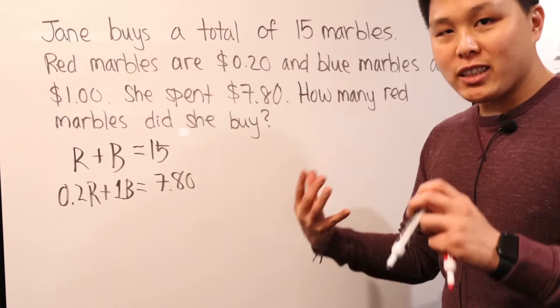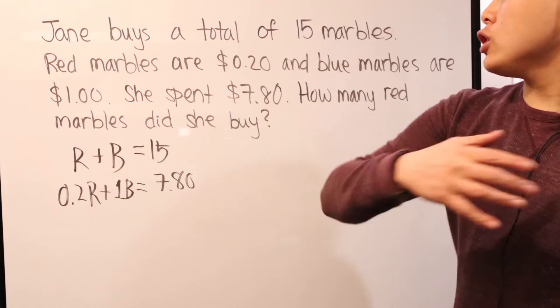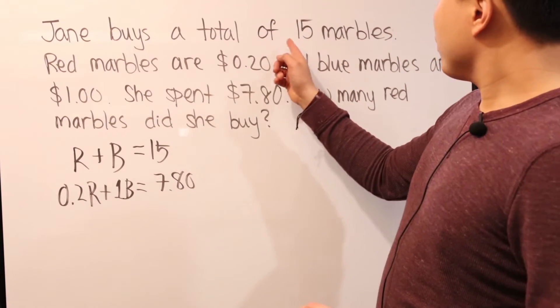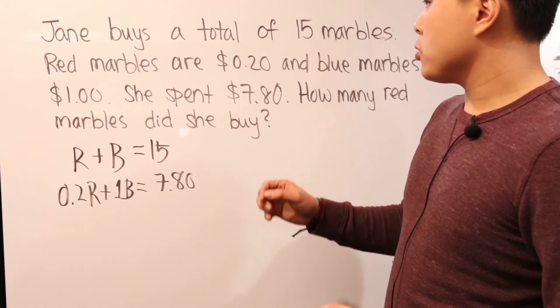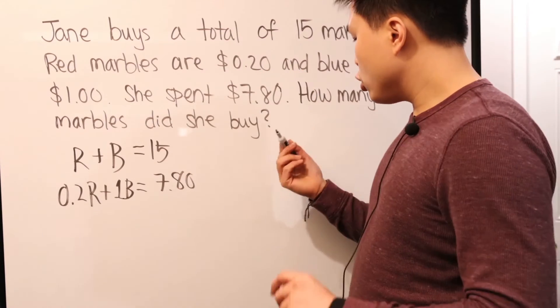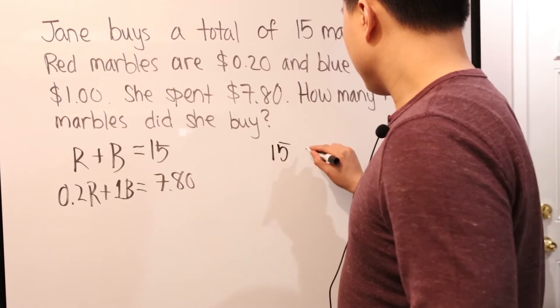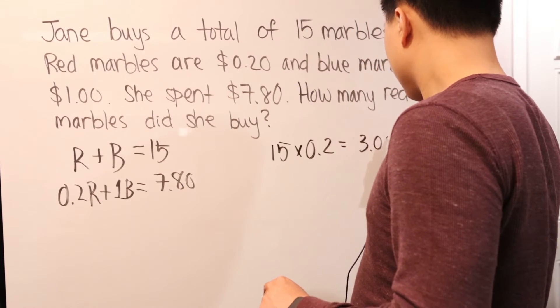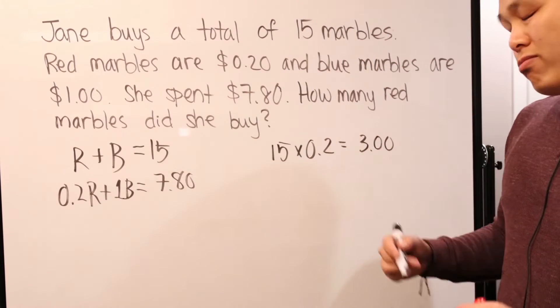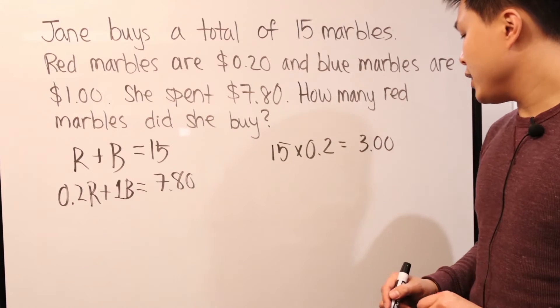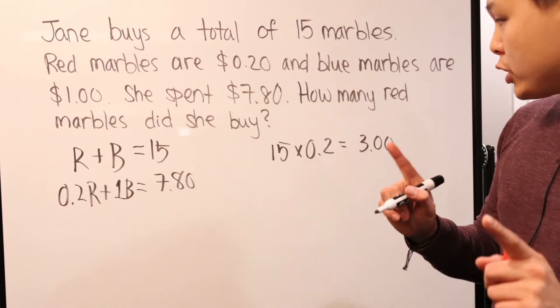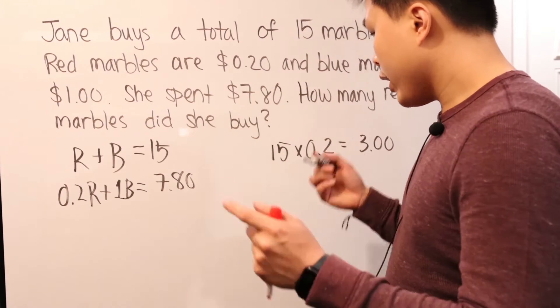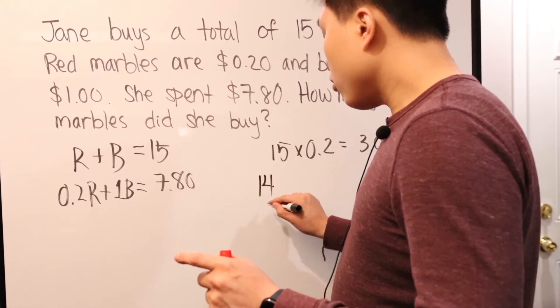Once again, we make a basic assumption. Let's just assume that she just bought all red marbles. Forget the blue ones. She just bought it all. Well, if that's the case, if all 15 marbles are red, then we can at least do some basic stuff. 15 times 0.2. What is that? $3. Okay. Well, that's not really how much she spent. She spent $7.80. Well, what happens if we change that? Instead of assuming all red, let's just assume that, okay, let's say if she got almost all red, let's say 14 of them are red.